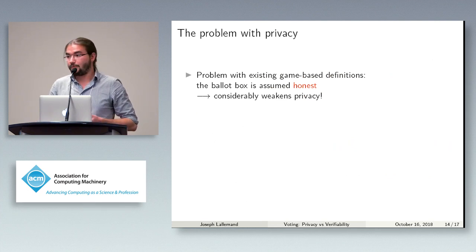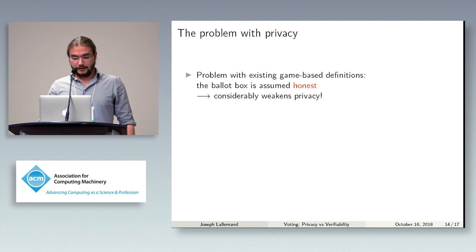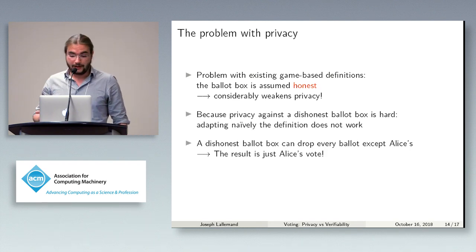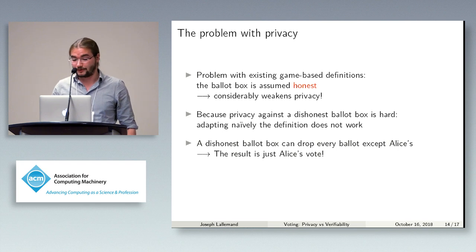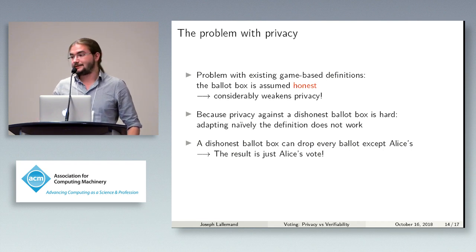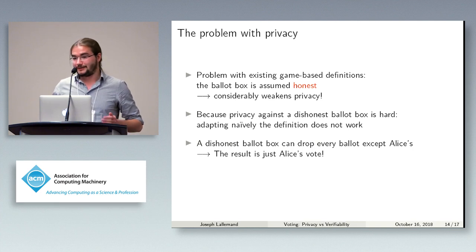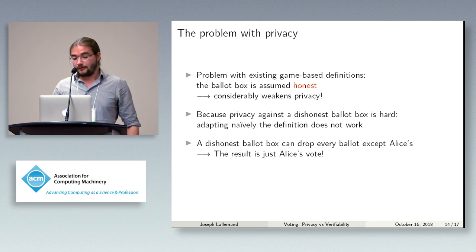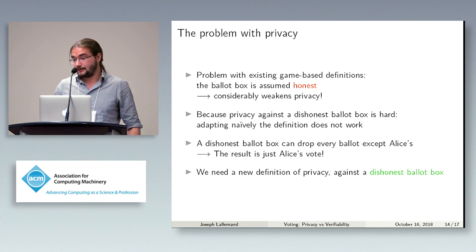This does not contradict our results, but it is a problem because protocols are trying to be private against a dishonest ballot box, not just an honest one. This shows there is a problem with the existing definitions of privacy — they usually assume that the ballot box is honest, which is a weaker property than the privacy the protocols are trying to achieve. The reason is that it's hard to define privacy against a dishonest ballot box, because if you naively adapt the definition, it becomes a very strong property that will never be satisfied.